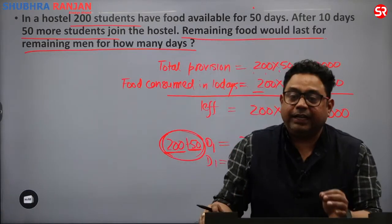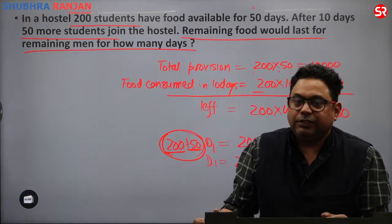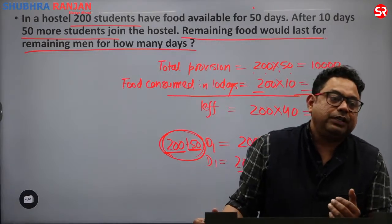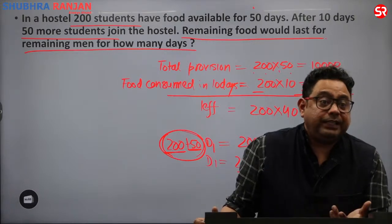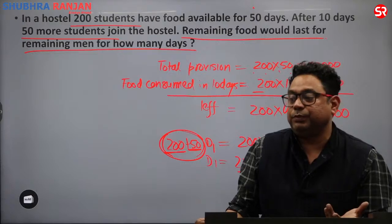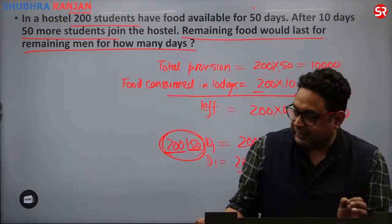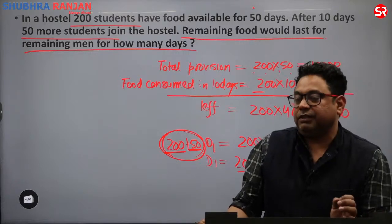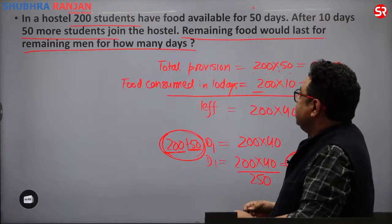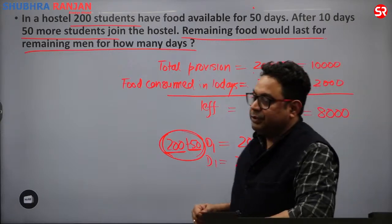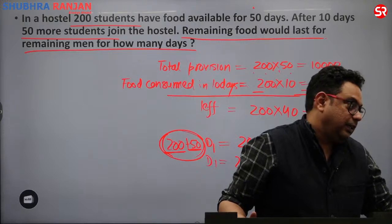I can change the question and ask: total number of days in which the food was consumed. The answer would be 32 plus 10 equals 42 days. So it comes in two parts — remaining food for remaining men gives 32 days, and total number of days would be 42 days.